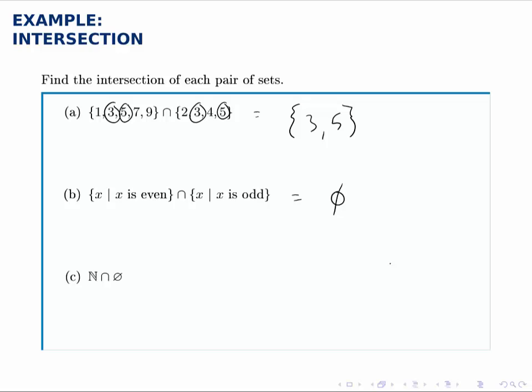Finally, for part C, we take the natural numbers and intersect that with the empty set. So we want to know what elements are common to the natural numbers and the empty set. Since there are no elements in the empty set, there are no elements that could be common to both. So this is going to again be the empty set.